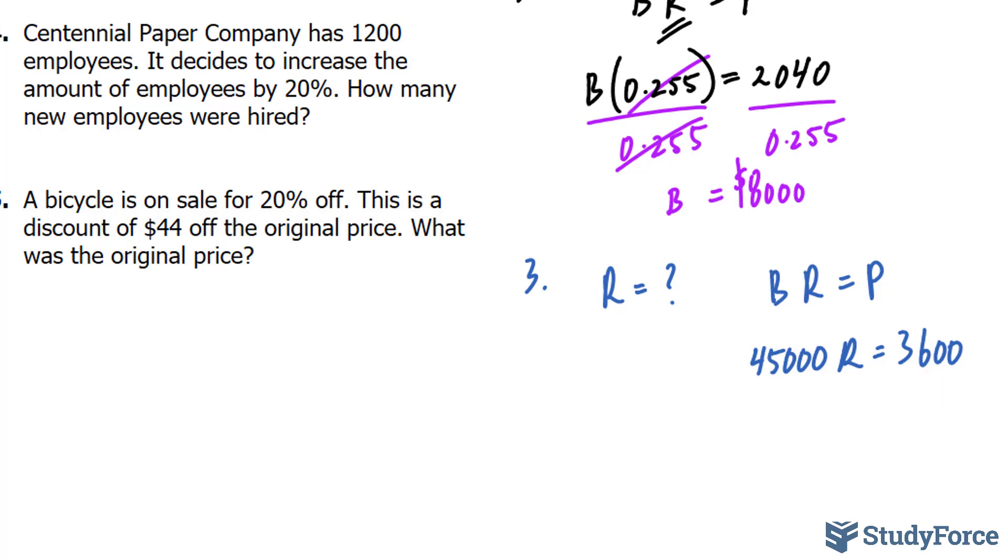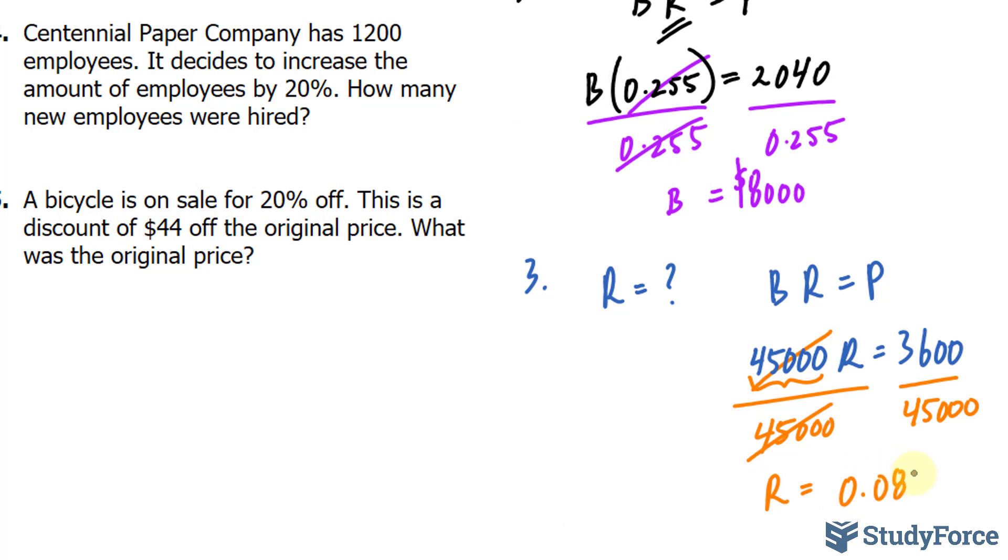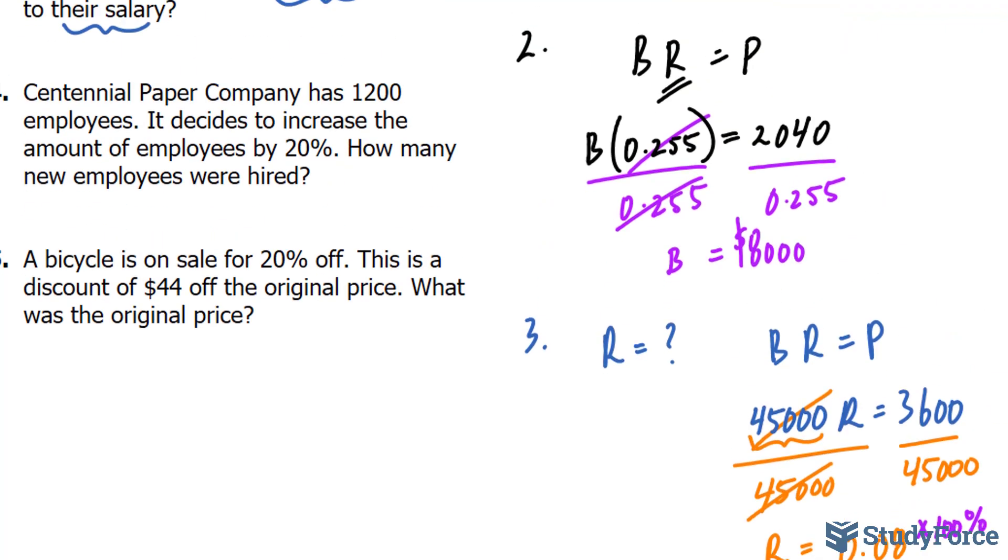Now we have to solve for R. And we can do that the same way we did in the previous example, where we divide both sides by $45,000. And what this will do is it will cancel out the $45,000 on the left side. And using our calculator, we get $3,600 divided by $45,000. And my calculator gives me 2 over 25. Some calculators will give 0.08. And don't be fooled to think that that's your percentage. Remember, this has to be multiplied by 100% to make it into a percentage. And if we do that, we end up with an 8% raise on their original salary.